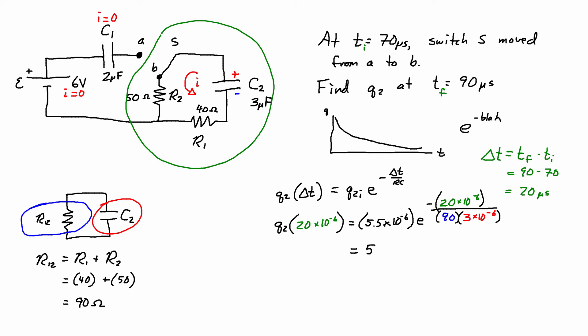So when I solve for this I get 5.1 times 10 to the negative 6 coulombs and this is 20 microseconds after the switch was changed. Remember I substituted in 20 microseconds for delta T which means that this is the charge at T final.